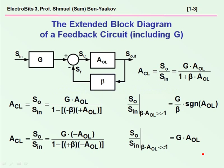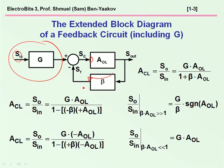In a previous ElectroBit — ElectroBit number 2 — it was shown that in general you can describe an amplifier based on an operational amplifier as a feedback system, but you do need to include an extra element: the G element. This G element describes the relationship between the actual input and the input to the amplifier when there is no feedback. It was also shown that the loop expression is described by this equation here, and these two equations — number 1 and number 2 — are for two cases depending on the polarity of the amplifier. Here the polarity is positive; here the polarity is negative.